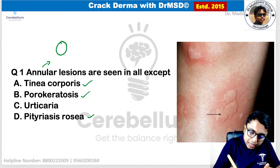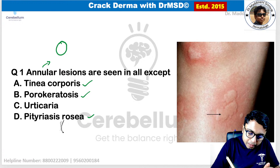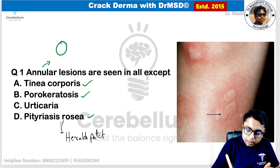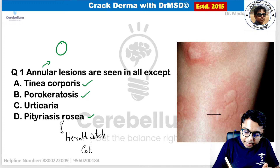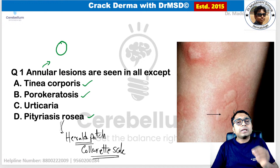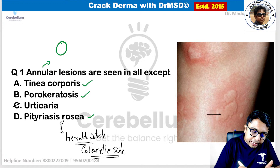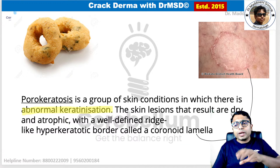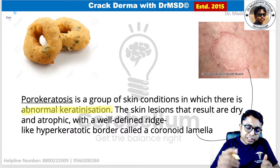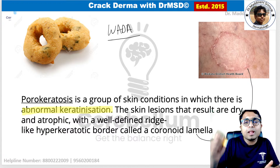In pityriasis rosea, there is an annular lesion called the herald patch, and there is a collared scale attached at the periphery. So pityriasis rosea also presents with an annular lesion. The answer to this question is urticaria — urticaria does NOT present with an annular lesion.